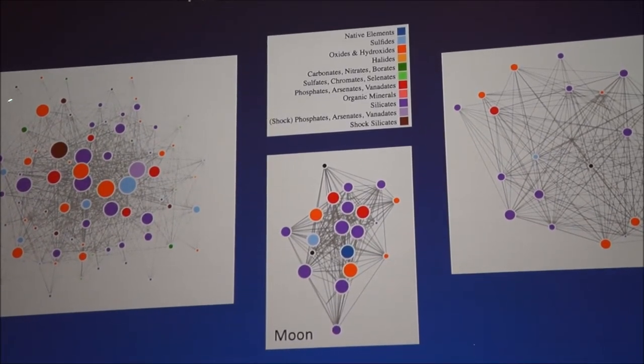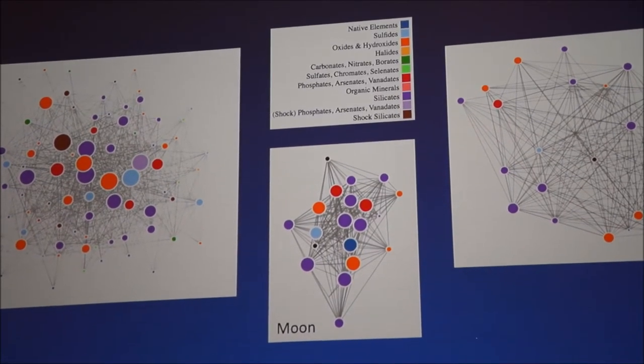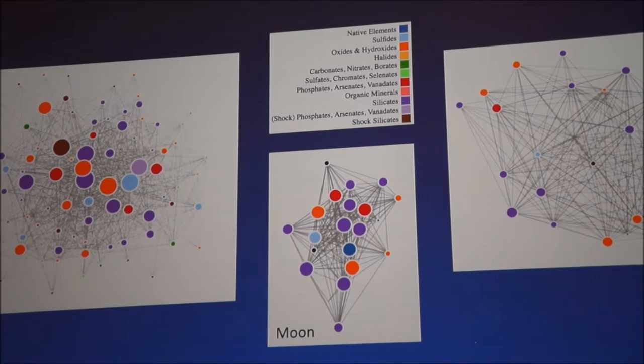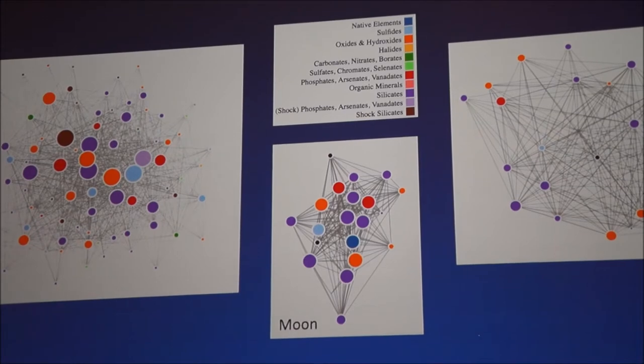From Mars, we see we have a lot of these small nodes, which means they don't occur very frequently, out here around the periphery, whereas here in Vesta, everything is pretty well connected.